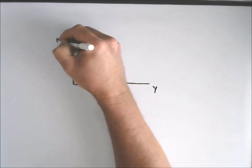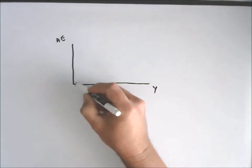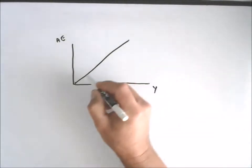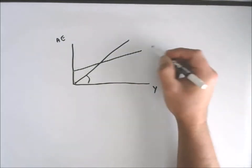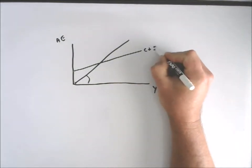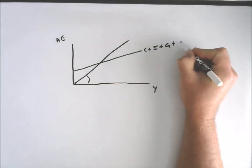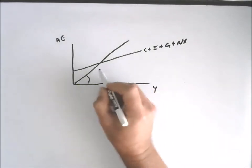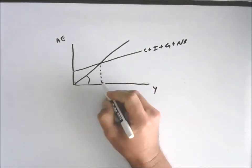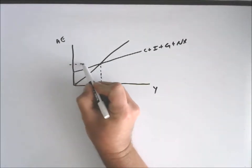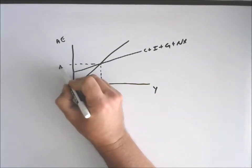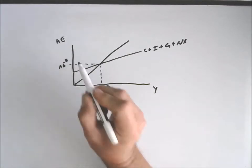You have expenditures—this is aggregate expenditures. You have the 45-degree diagram, you have C plus I plus G plus NX, you have some level of GDP, you have some level of planned expenditures at equilibrium.